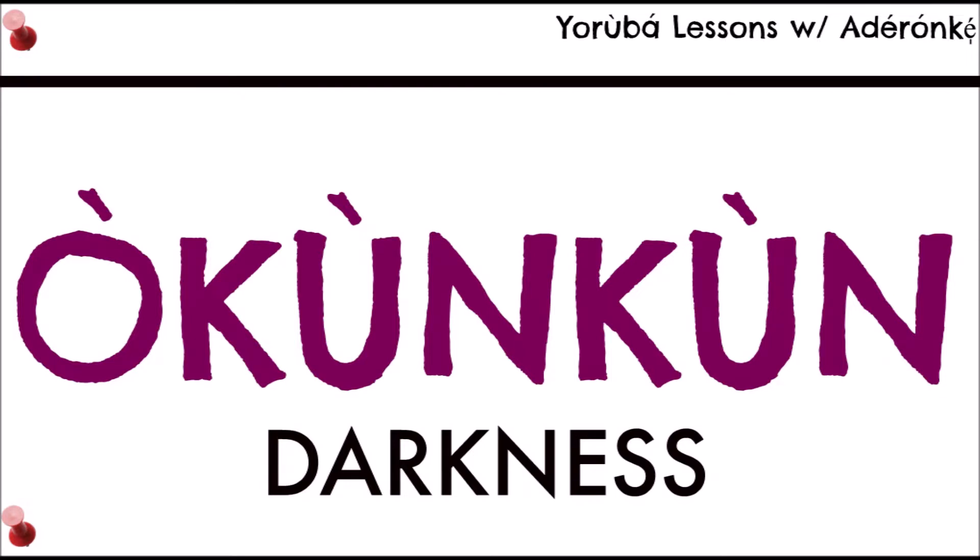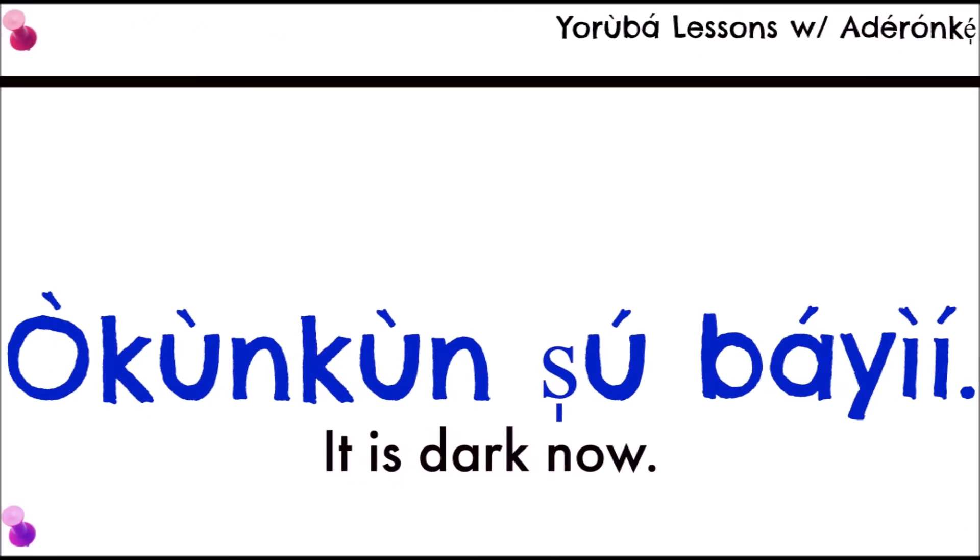The first word, which is darkness, is 'okùkun.' An example sentence is 'okùkun shùbàyí.' The word 'shù' gives the idea that something is cloudy or that darkness has covered something — it's not clear. So 'okùkun shùbàyí' means 'it is dark now' or 'it is presently dark.'